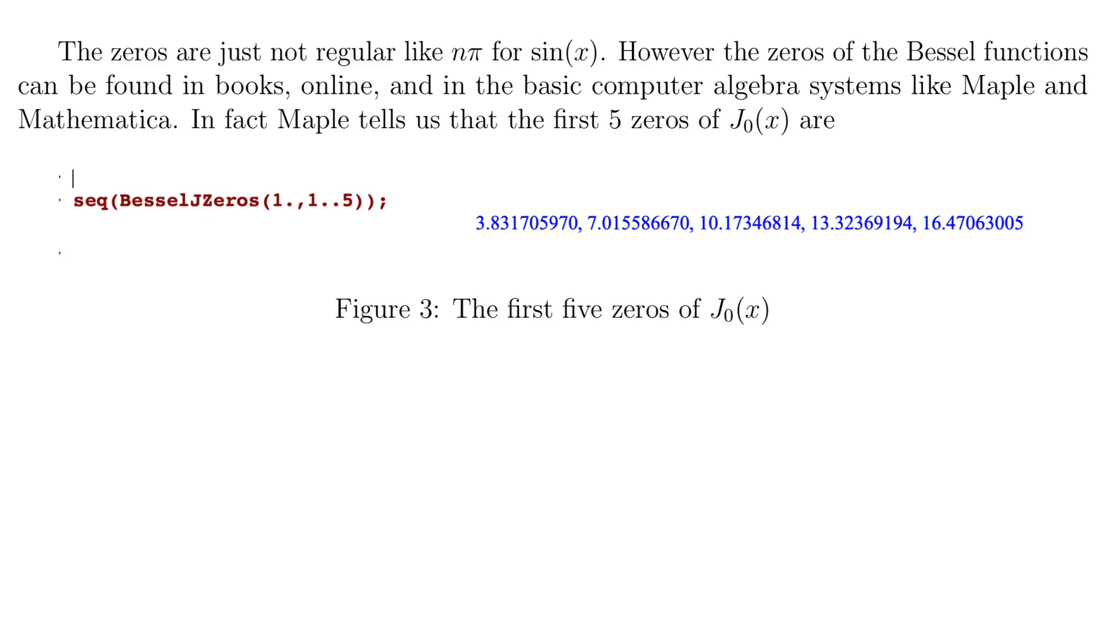They can be found in books, online, and in basic computer algebra systems like Maple and Mathematica. In fact, here Maple tells us that the first five zeros of j sub 1. So in Maple, Bessel j zeros, the first entry is which Bessel function, and the second one gives us a range of which zero. So we want the first five zeros of j1, and they're given here in blue.